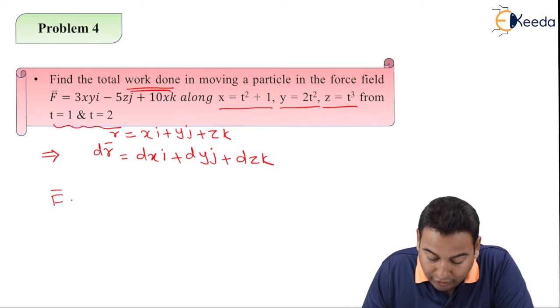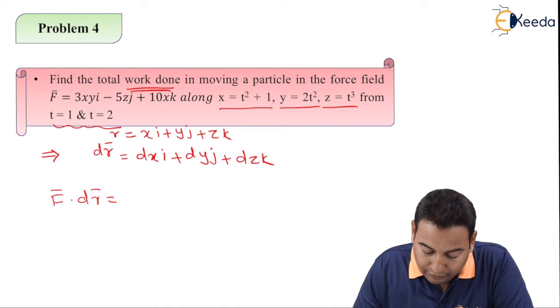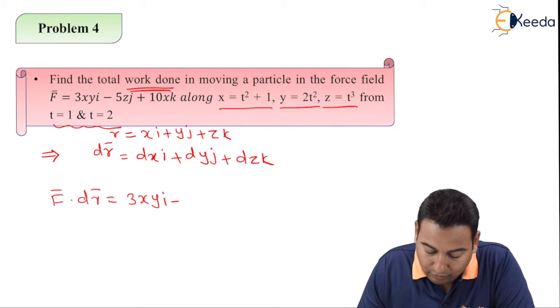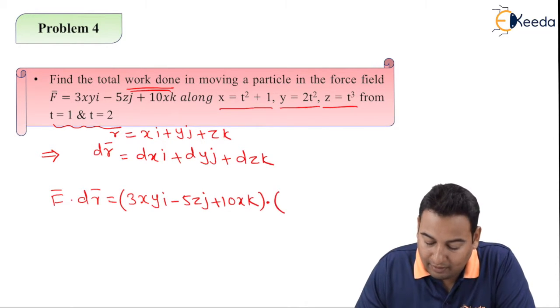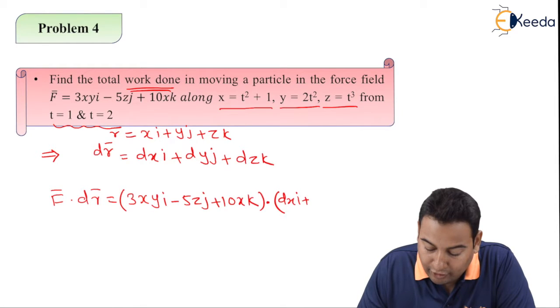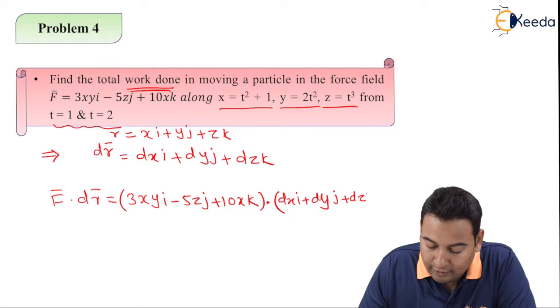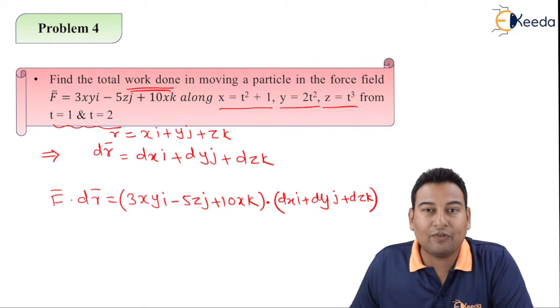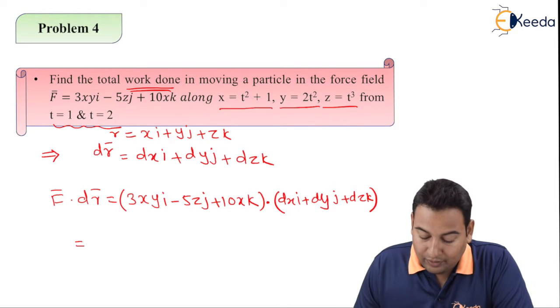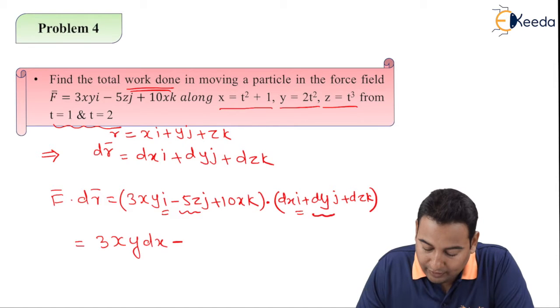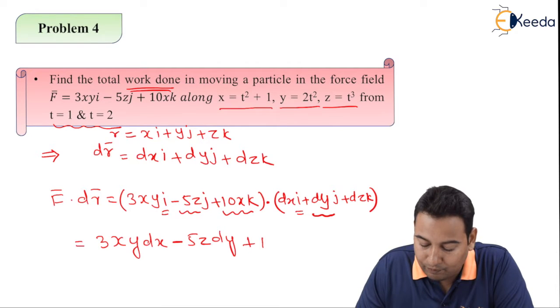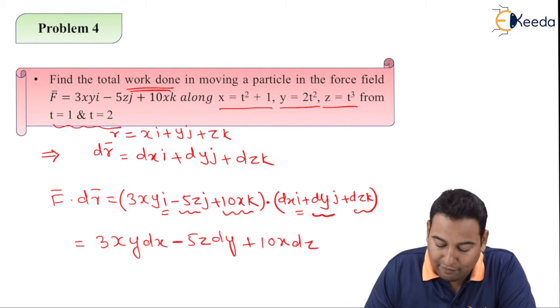Let us find out F bar dot dr bar. F bar dot dr bar means 3xy minus 5zj plus 10xk dot dr bar, that is dxi dyj and dzk. With i we're going to multiply that is 3xy dx, minus with j, 5z dy, and finally with k we have 10x dz. This is F bar dot dr bar.